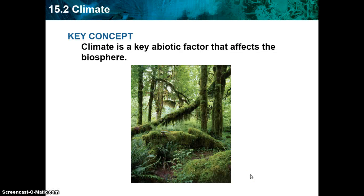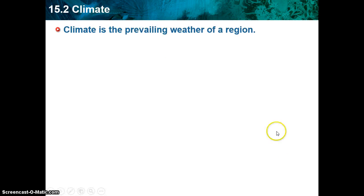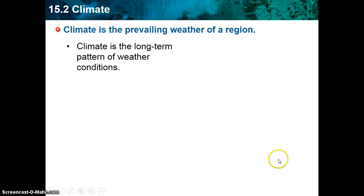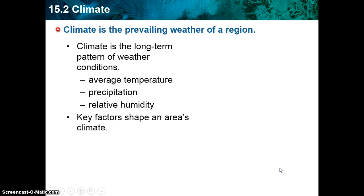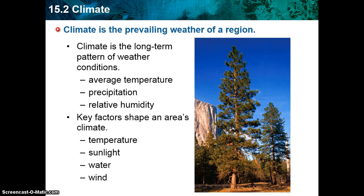Section 15.2 is on climate. The key concept is that climate is a key abiotic factor that affects the biosphere. Remember, putting 'a' in front of a word in science changes it to 'not,' so abiotic means not-biotic factor. Climate is the prevailing weather of a region — it's a long-term pattern of weather conditions, including things like average temperature, precipitation, and humidity. Key factors that shape an area's climate include temperature, sunlight, the amount of water, and wind.